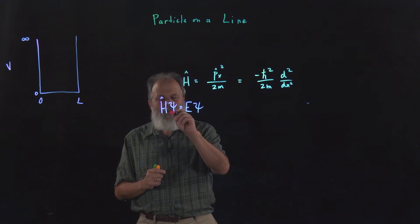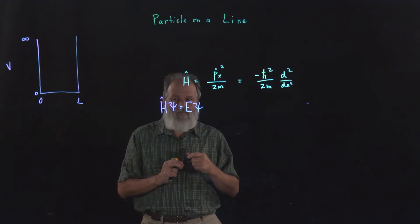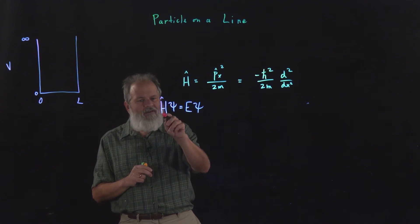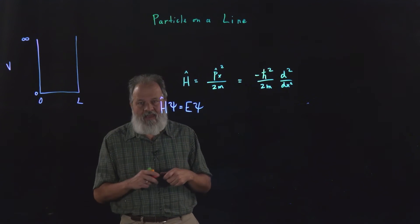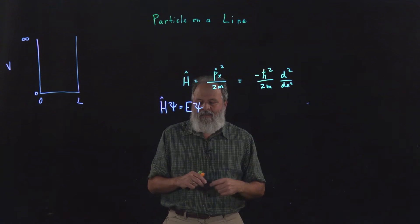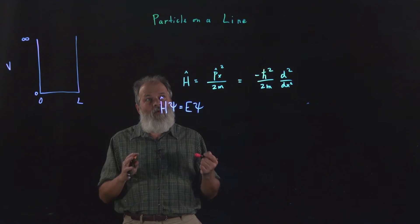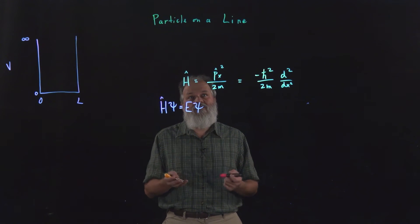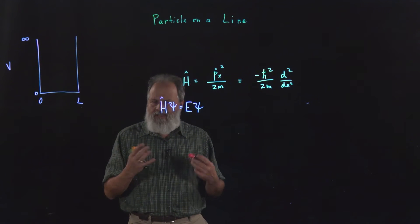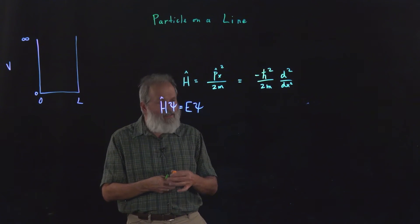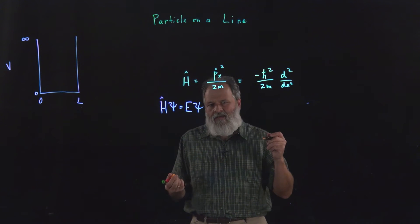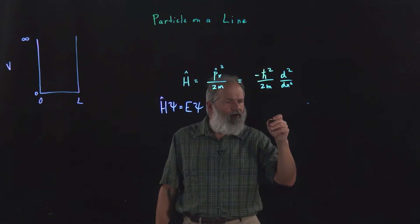So we need to ask ourselves, the second derivative of psi must equal a constant times psi. So that naturally leads to the question, what are functions whose second derivative is basically constant times themselves? Here are the list. We've seen this list in the free particle as well.